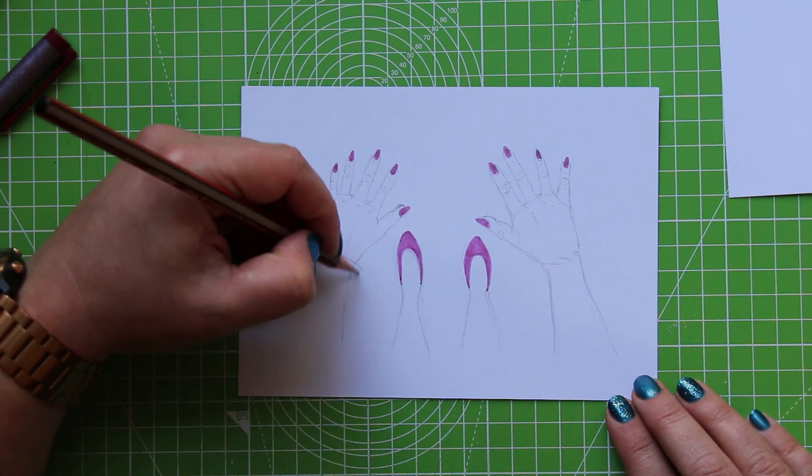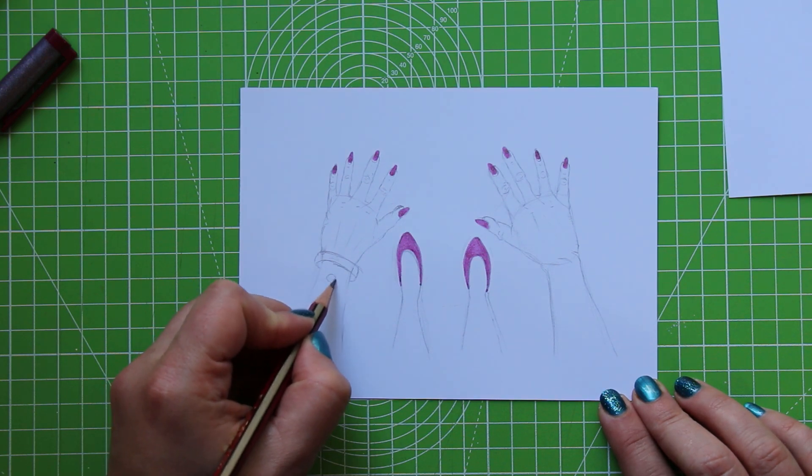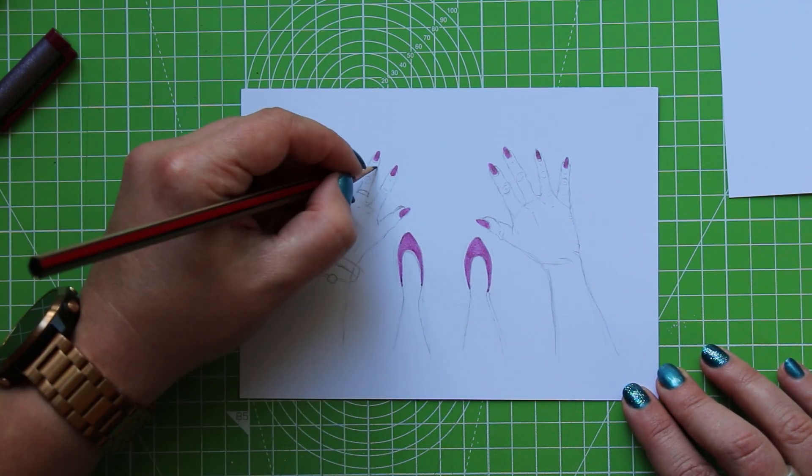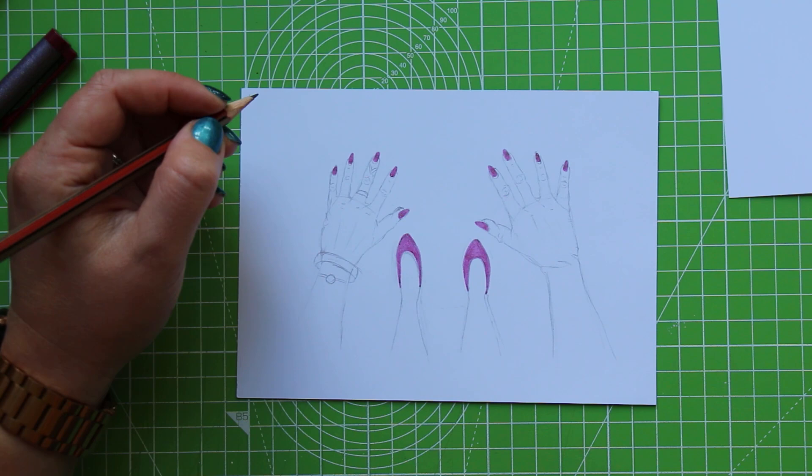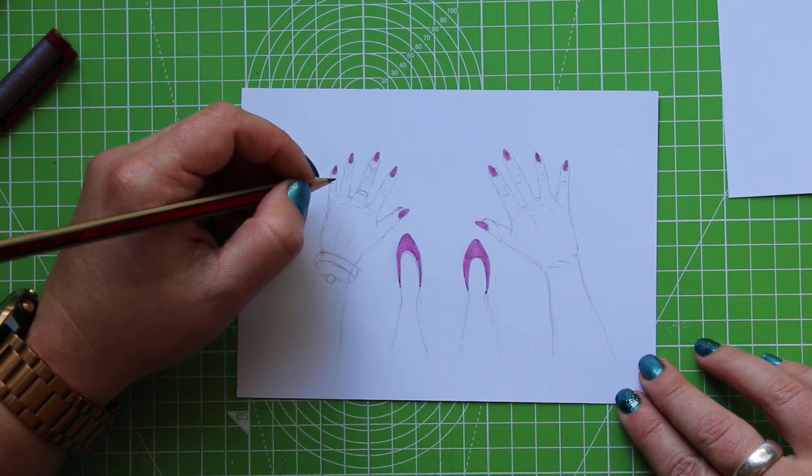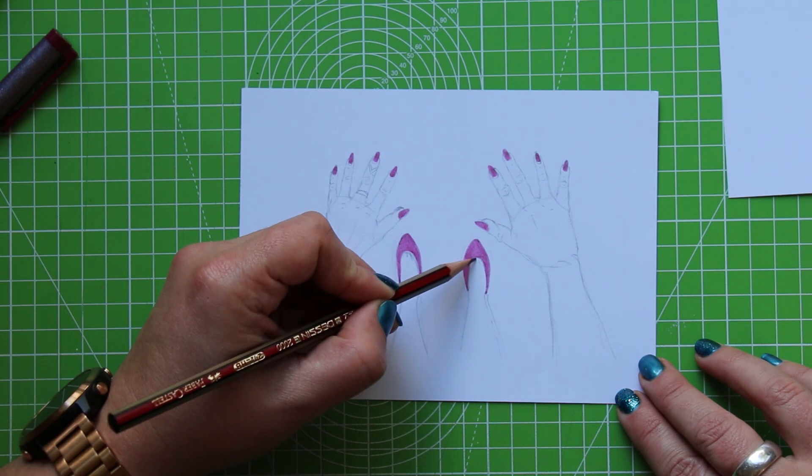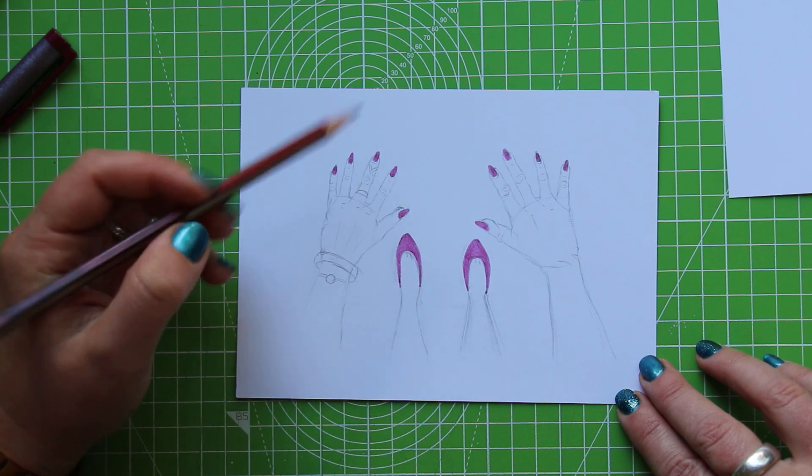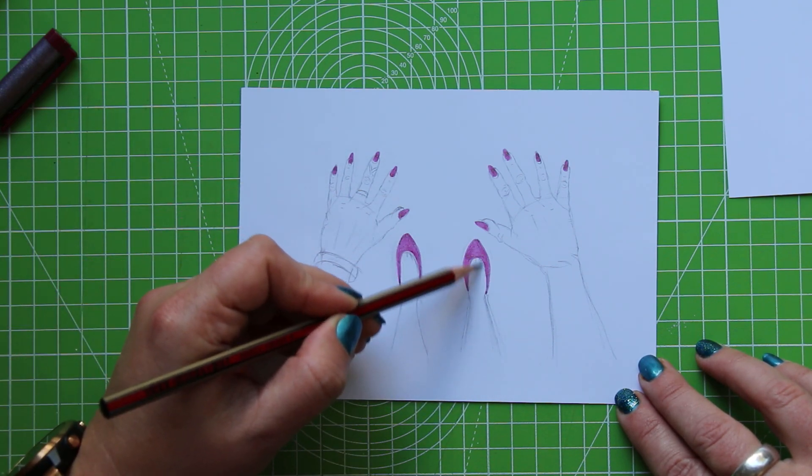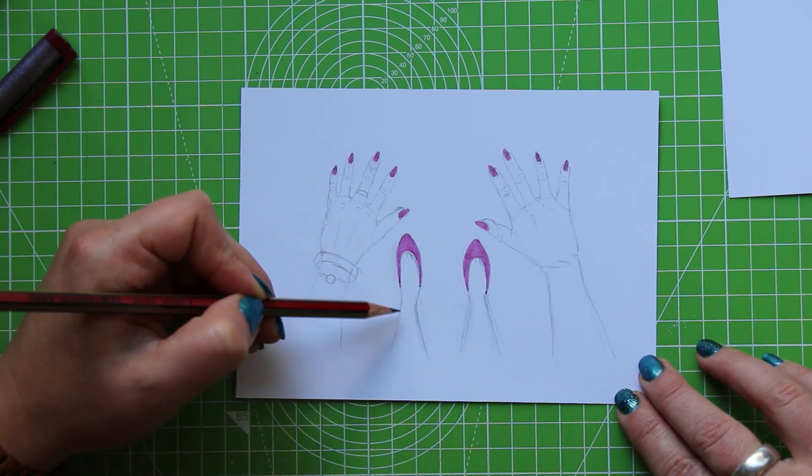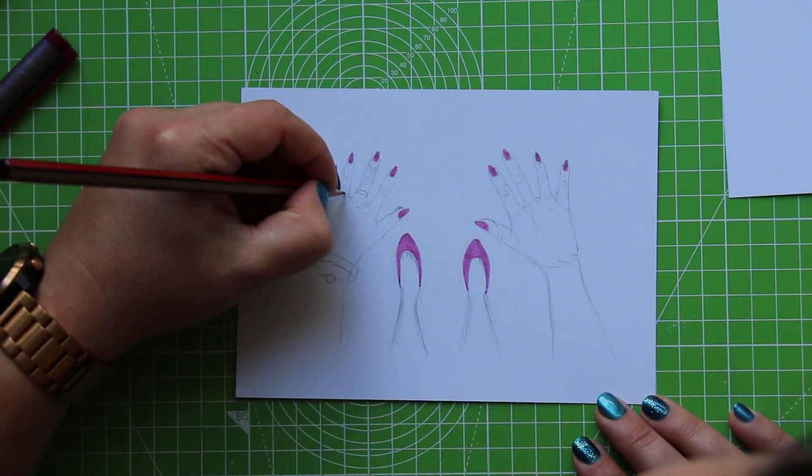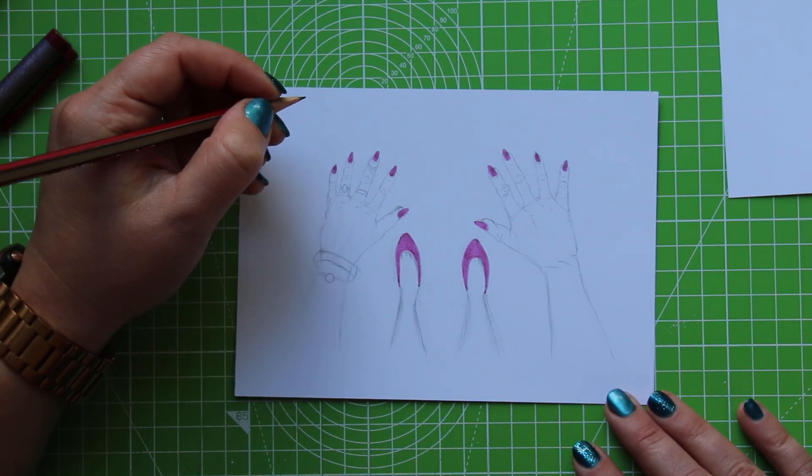Here we go, this is where the dressed up part comes in. I have adorned this female's hands and wrists with jewelry of all descriptions. What I used for a reference picture here was one of these hand models that you see on websites where you can buy multi-packs of finger rings. They tend to have all the rings on one hand, so I took one of those and used them as a reference.